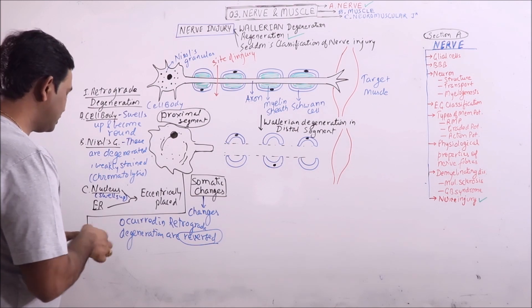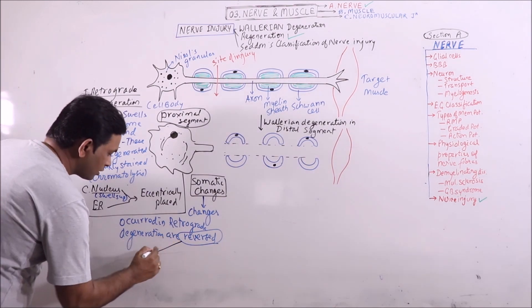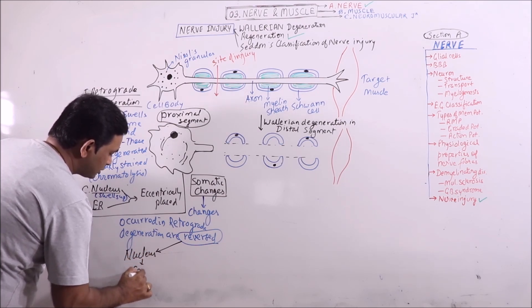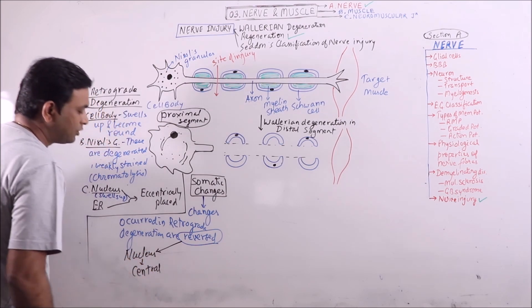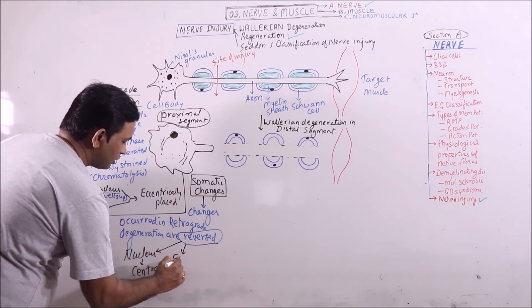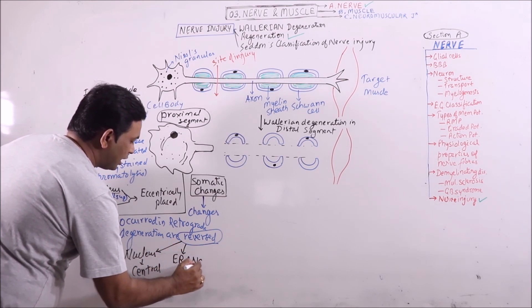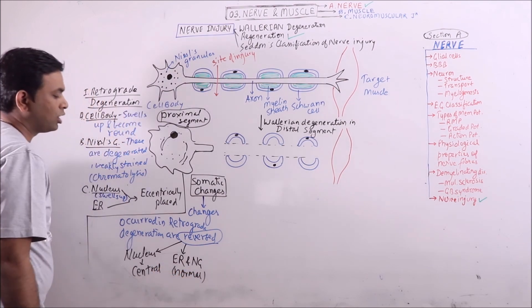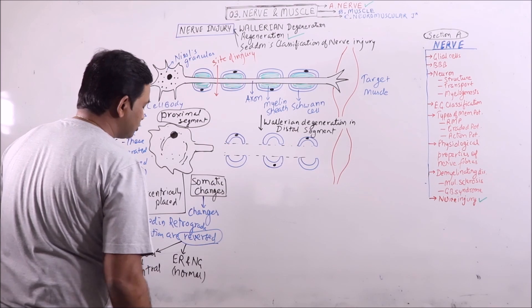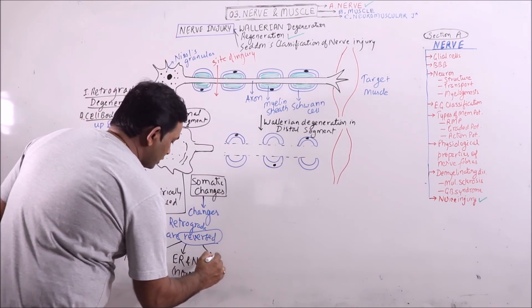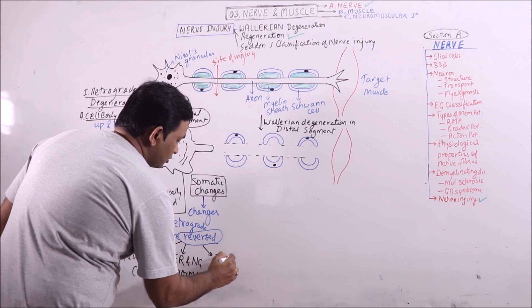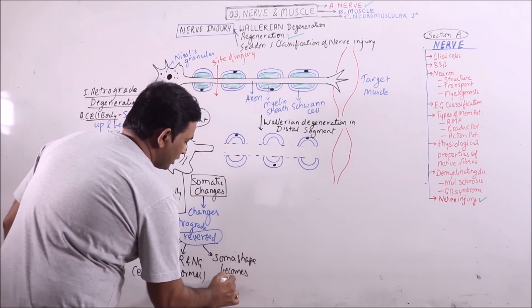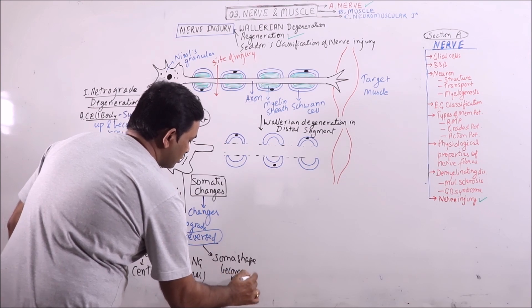That means the endoplasmic reticulum appears. The endoplasmic reticulum again becomes central in position. Then ER and Nissl granules appear and become normal. ER acquires normal position. Soma shape becomes normal.